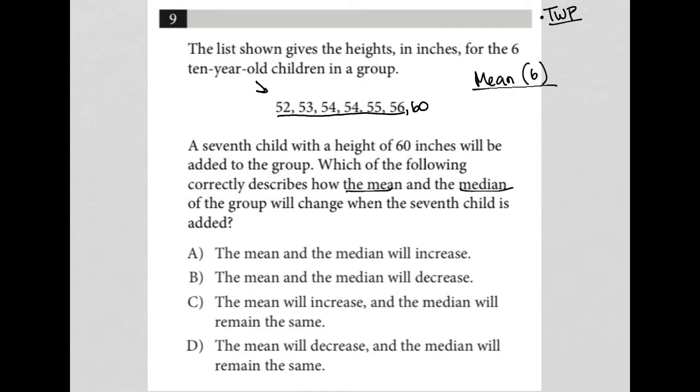So how do we find a mean? We find the mean by adding up all six heights. So let's just go to our calculators and do that pretty quickly. 52 plus 53 plus 54 plus 54 plus 55 plus 56. I get 324 and then I divide that by six. So I get a mean of 54.